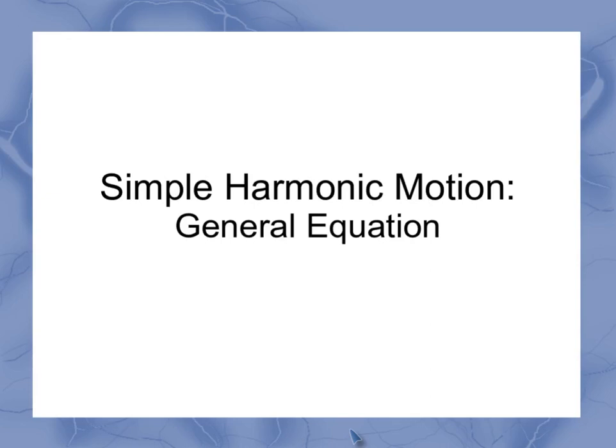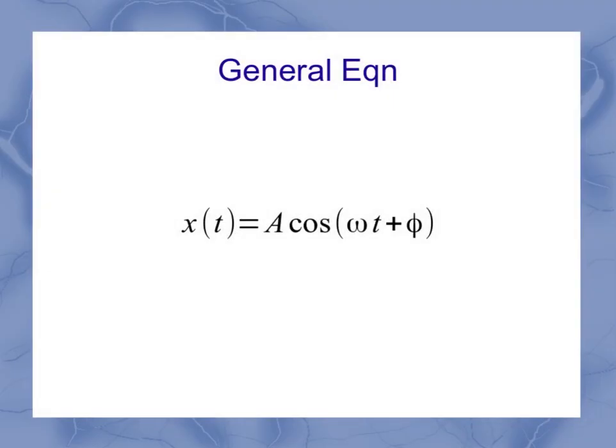Now we introduce the equation for simple harmonic motion. This is the general equation that can be used for several situations. The equation itself looks like this: x of t equals A cosine omega t plus phi.